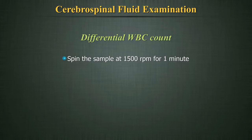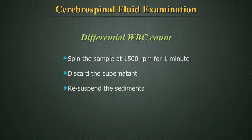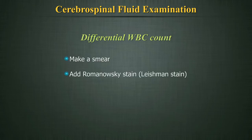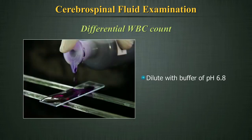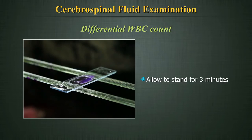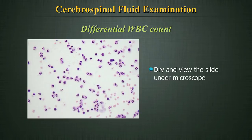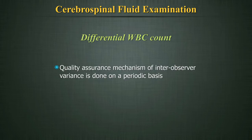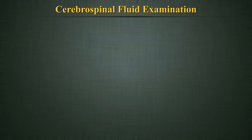Differential WBC count: Spin the sample at 1500 revolutions per minute for 1 minute. Discard the supernatant and re-suspend the sediment in the available fluid. Make a smear from the sediment and add a Romanowski stain such as Leishman stain; allow to stand for 1 minute. Dilute with buffer of pH 6.8 and allow to stand for 3 minutes. When dry, view the slide under the microscope and perform the differential count of WBCs. A quality assurance mechanism of inter-observer variance, i.e. testing by at least 2 people and analysing each report, should be done on a periodic basis.